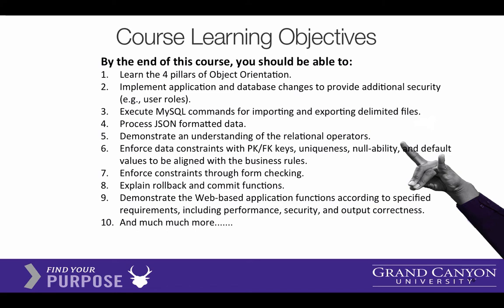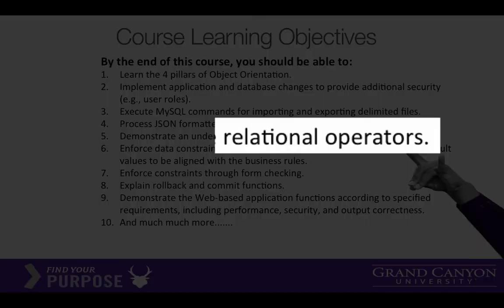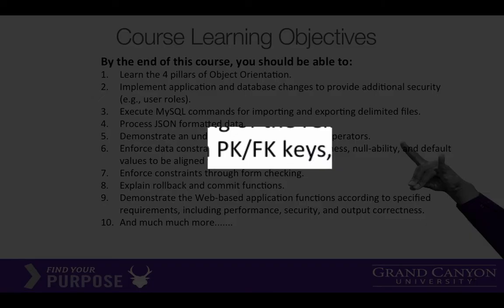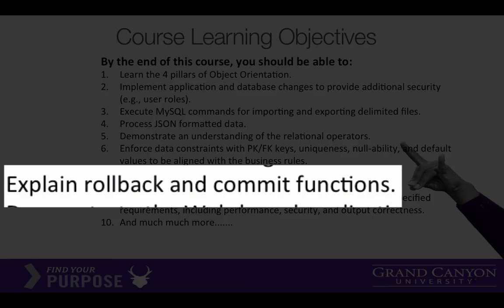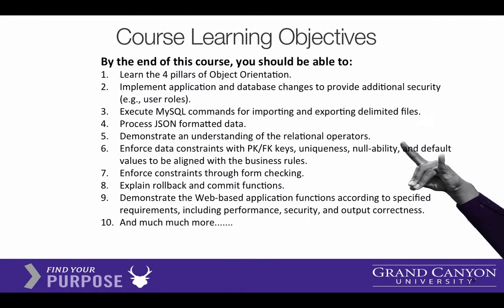Objectives five and six involve working with databases. We'll talk about relational tables so that we have foreign keys and uniqueness set in our keys, and we'll do extra practice on SQL and table construction. Objective number seven involves data validation every time we do a form submit. And number eight covers rollback and commit functions, so we do transactions that are either completely successful or fail — that way, when we do financial transactions, we don't have half-purchased items.